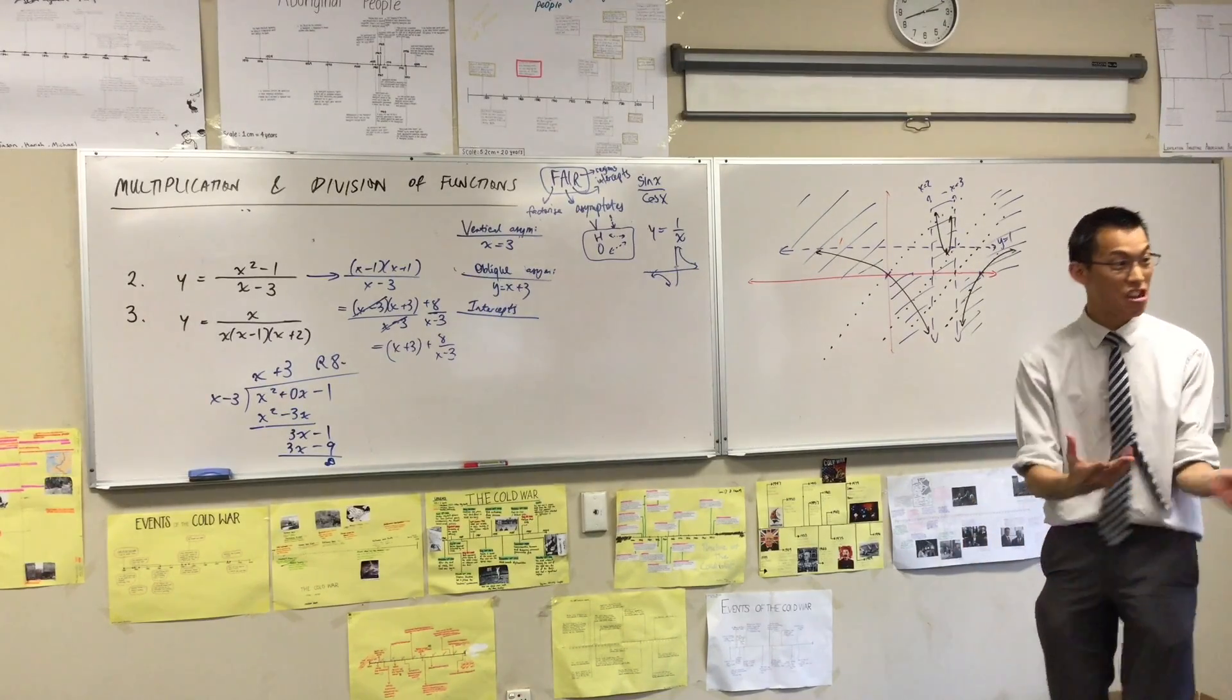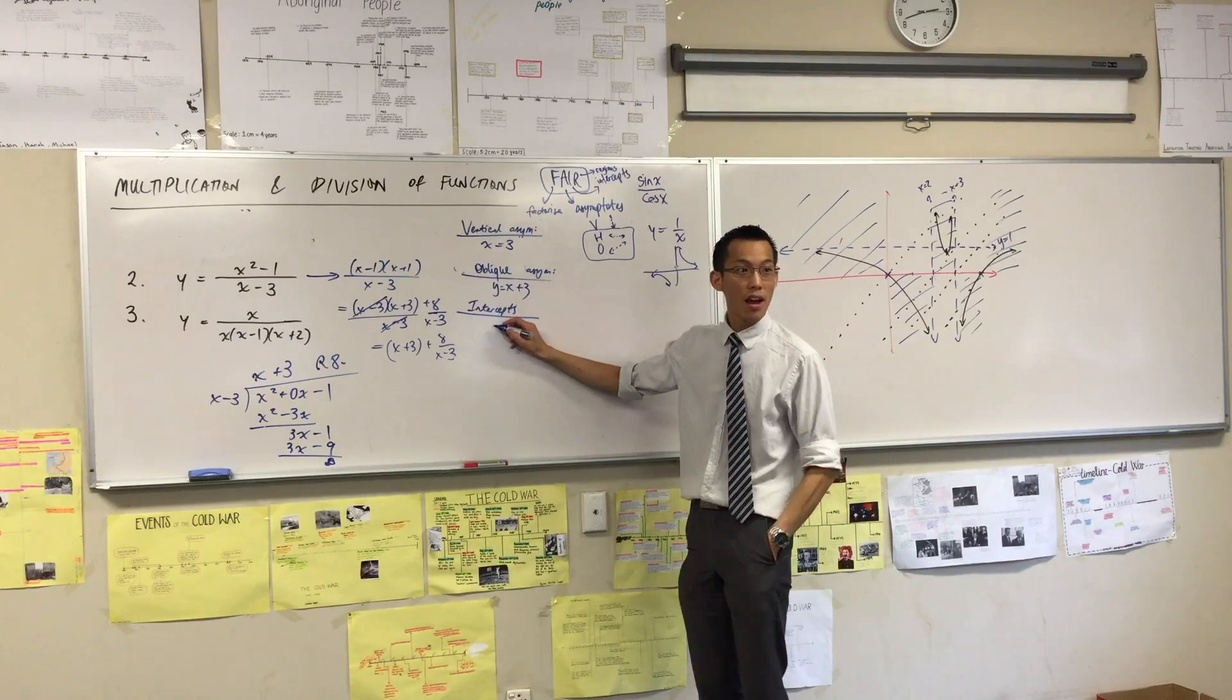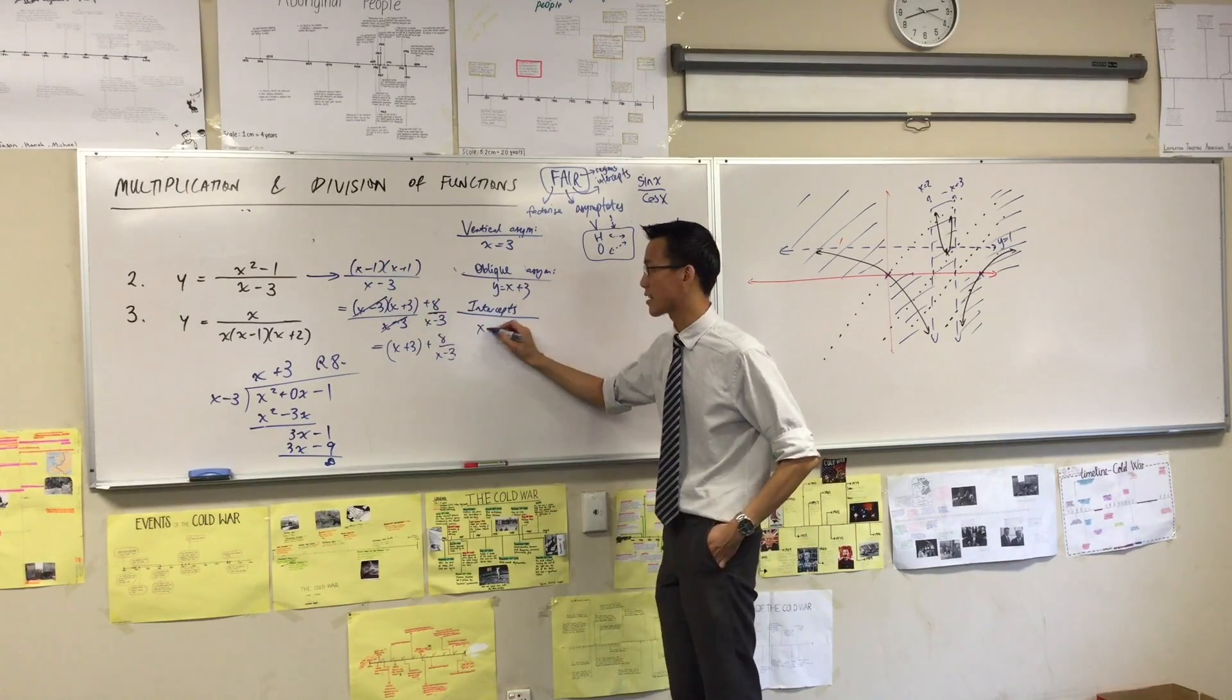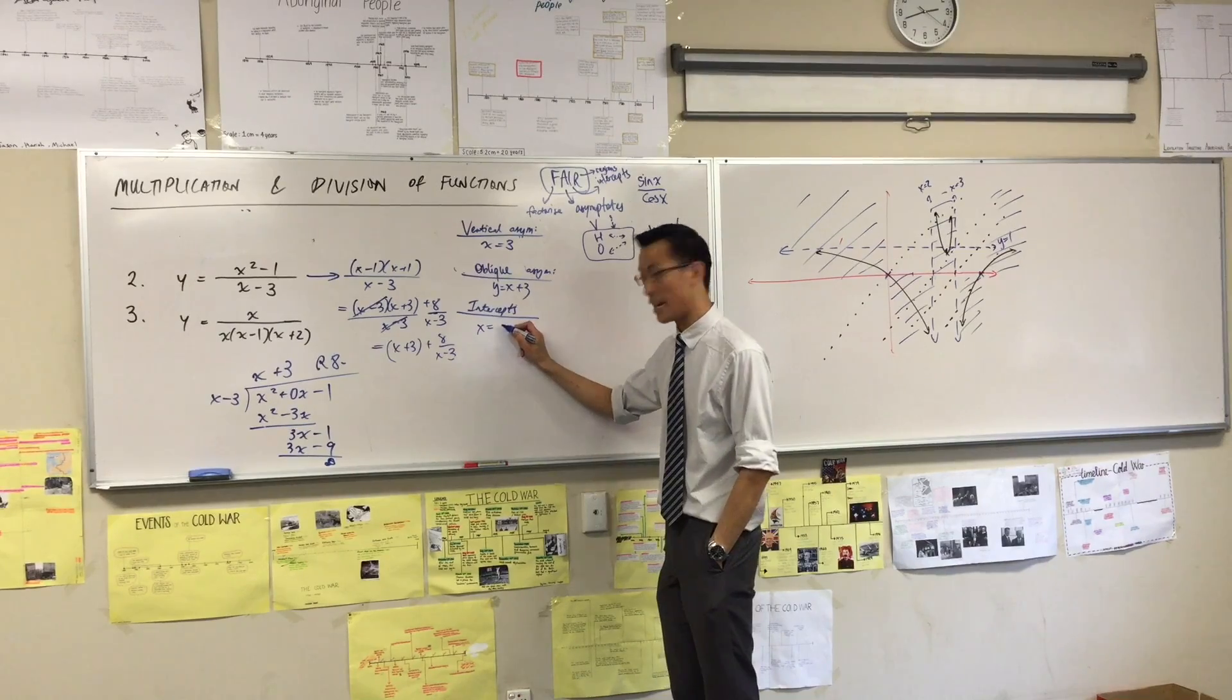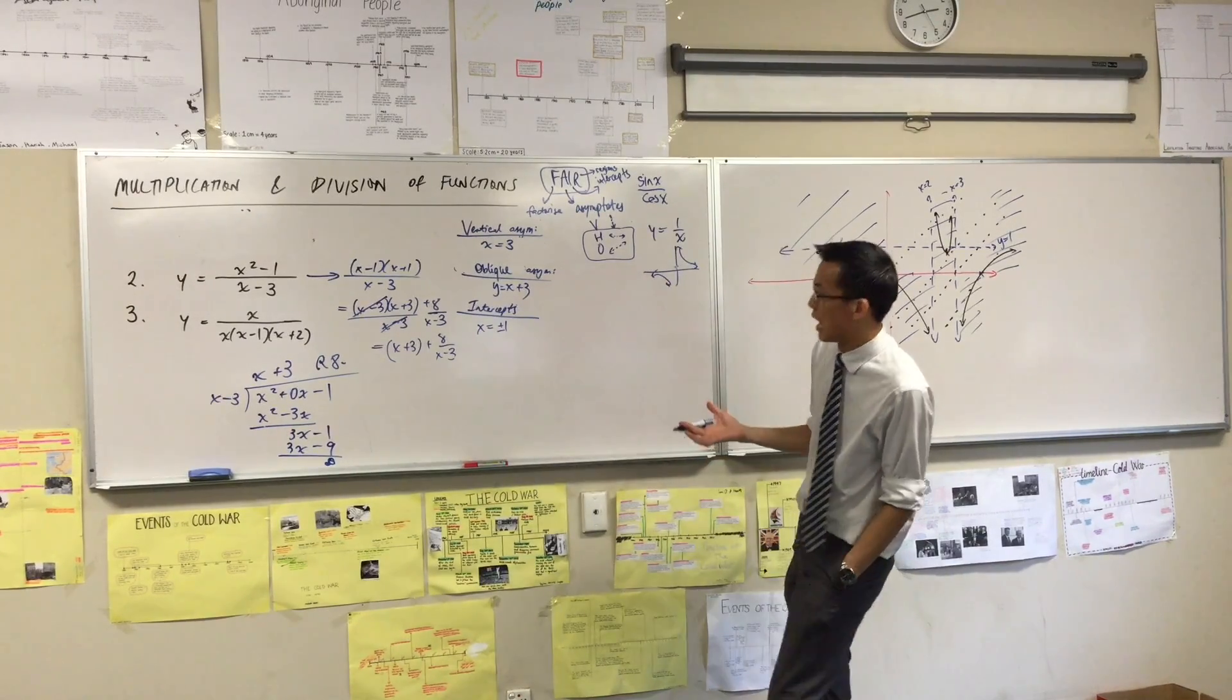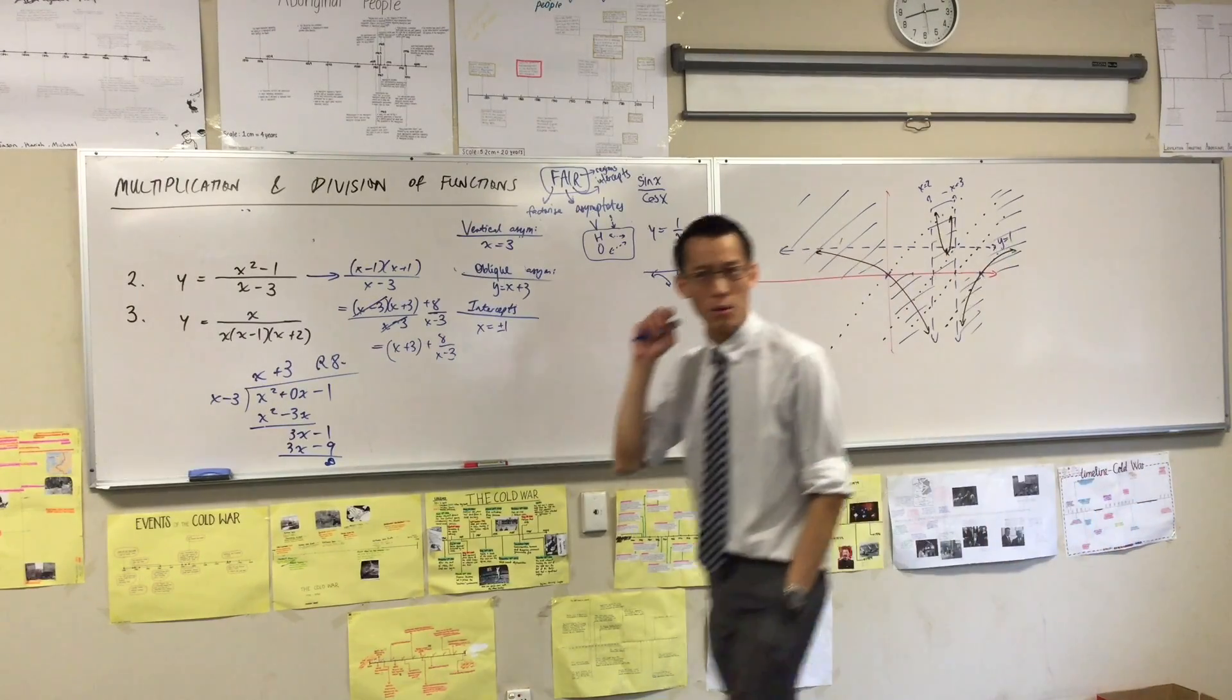We're on the homestretch now. Intercepts, help me out. You've got the x-intercepts that you can just read off this numerator, namely x equals plus or minus one. That means I should be able to find a y-intercept as well.